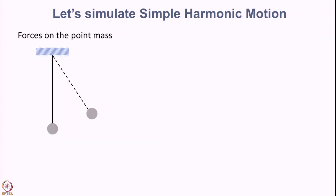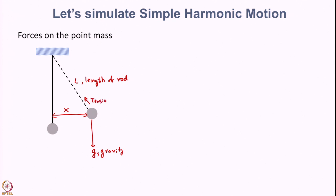To understand the model further, we have displacement x, and let L be the length of the rod. On the point mass, a force acts — gravity g. Along the length of the rod we have a tension acting up, and perpendicular to the tension we have acceleration a.